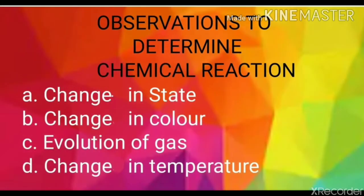You may perhaps be wondering what is actually meant by a chemical reaction. How do we come to know that a chemical reaction has taken place? Some observations help us determine whether a chemical reaction has taken place or not. These observations are change in state, change in color, evolution of a gas, change in temperature. Let us perform some activities to understand these observations better.